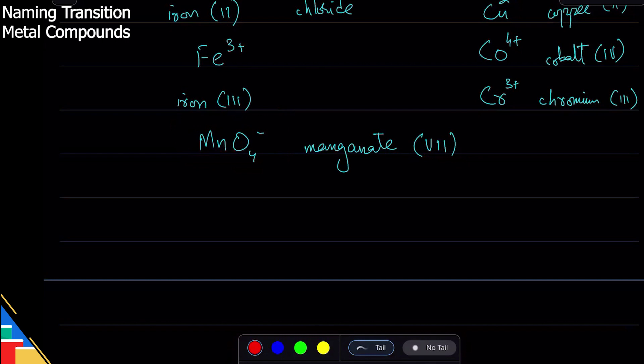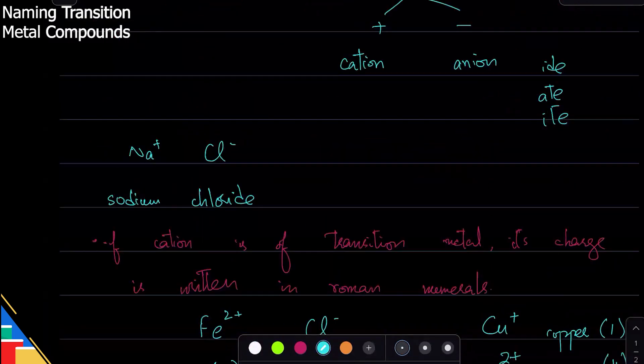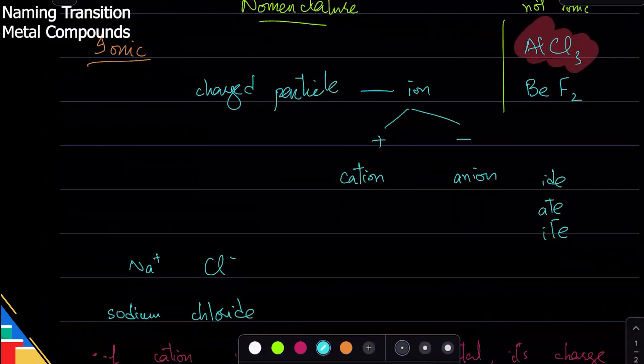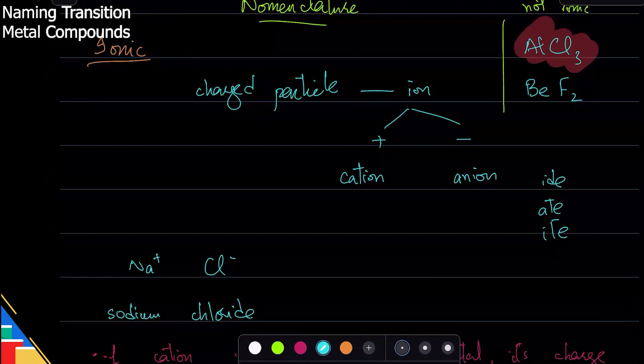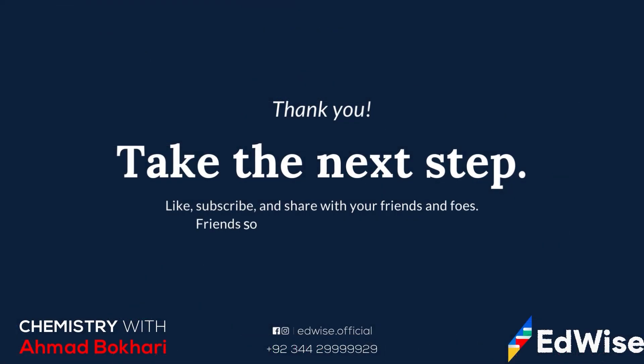Okay, so metals we simply name them if they're ions, and if it is a transition metal ion, we mention the charge. That's it, that's literally how you name the compounds.